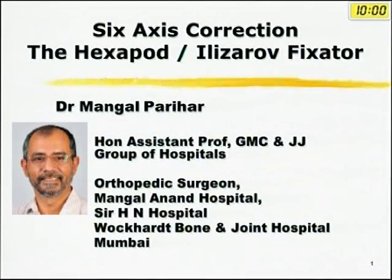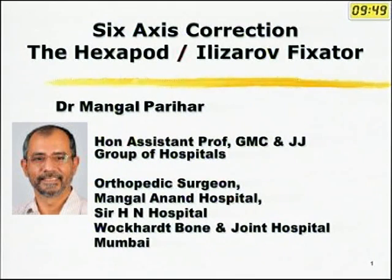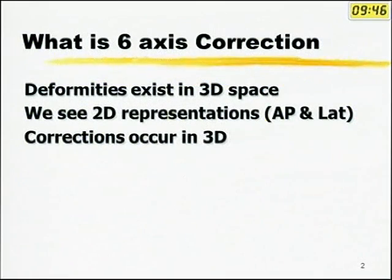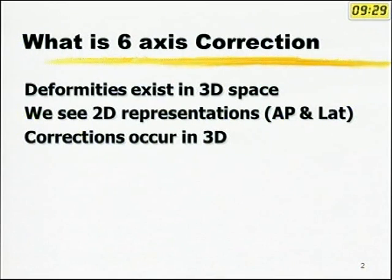I am going to try and introduce this concept of six-axis correction. This is not necessarily an exam question, but it is something which is important or will be important in terms of your concepts in deformity correction. Because actually, in real life, deformities occur in 3D space and deformities are corrected in 3D space. What we are seeing is only 2D, two-dimensional representations of three-dimensional deformities.